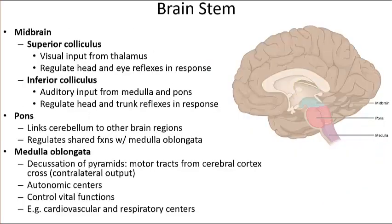The brain stem includes the midbrain, pons, and medulla oblongata. Though small, it plays an extremely important role as the main connector for nerve connections of the motor and sensory systems from the body to the upper areas of the brain. The midbrain contains nuclei processing visceral and auditory information, controls reflexes triggered by these stimuli, and contains centers that help maintain consciousness.